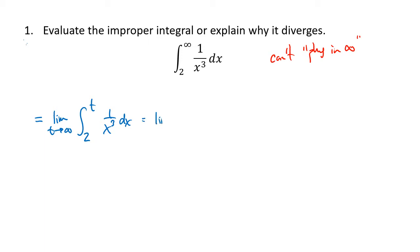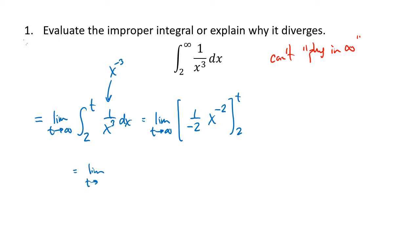Now that we've rewritten it as a limit, we actually sort of ignore the limit for a little while and focus on the integral. Remember that 1 over x cubed is x to the minus 3. So when we take the antiderivative, we get x to the minus 2 multiplied by 1 over minus 2. We're going to evaluate that from 2 to t. So when we plug in t, we get minus 1 half times t to the minus 2, which I can rewrite as minus 1 divided by 2t squared. Minus a minus is a plus, and that's going to be 1 over 2 times 2 squared.